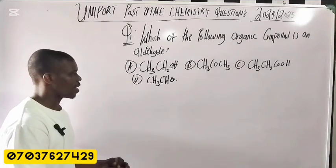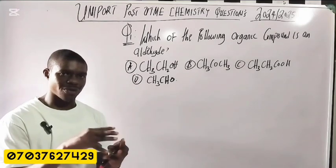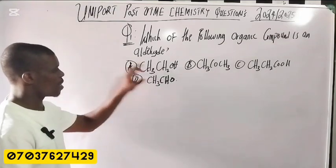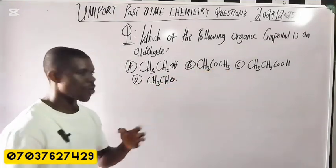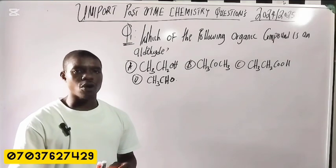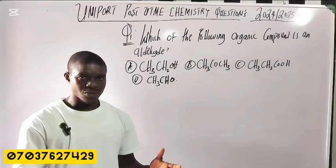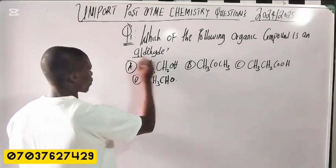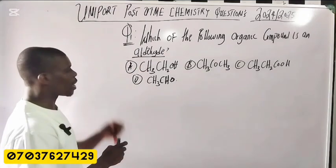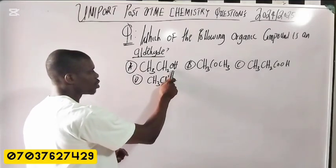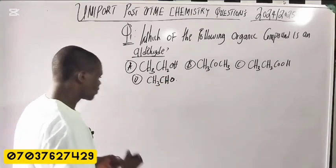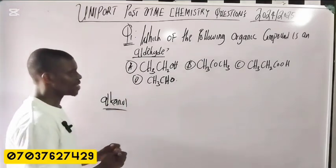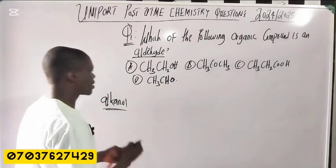Now let's look at the question. This is why you need to understand organic chemistry very well. You have options A, B, C, D. Whenever you see a question like this, look for the odd one out — which one will not be an aldehyde? Let's talk about the various functional groups. If you look at option A, it has an -OH group, which is an alcohol. So whenever you see -OH, it is an alcohol.